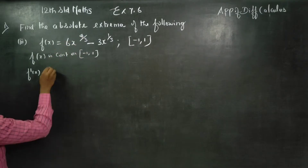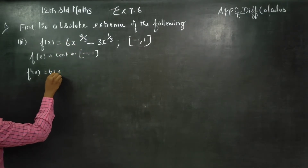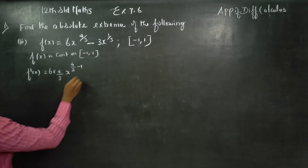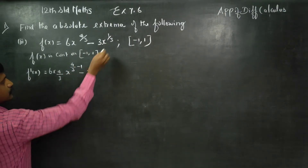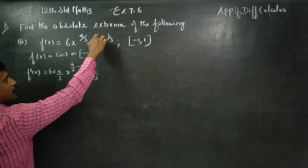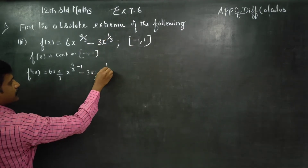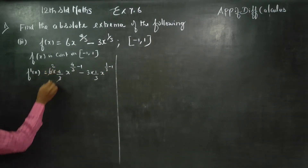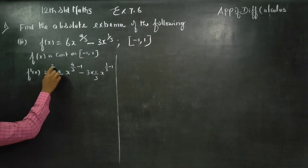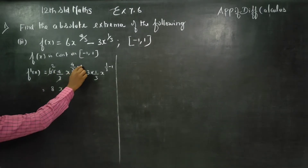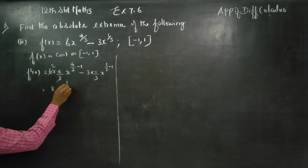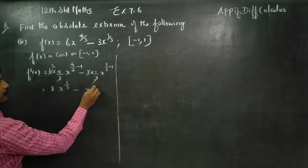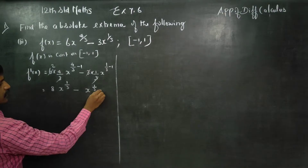When we differentiate, bringing the power down: 6 into (4/3) x power (4/3 - 1), minus 3 into (1/3) x power (1/3 - 1). After cancellation and cross multiplication, 4 minus 3 becomes (1/3), giving us x power (1/3) minus x power (1/3) times x power minus 1.